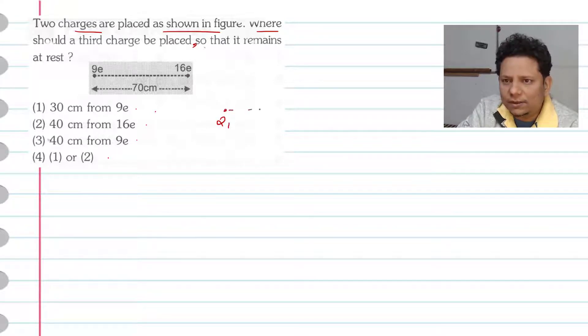two charges, let's say Q1 and Q2, both values positive. If we have placed them, then the equilibrium point comes